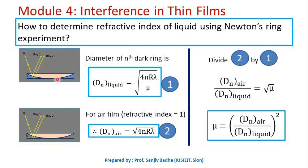If we fill this gap between the spherical surface and plane surface with liquid, for the liquid film, the diameter of the nth dark ring is given by (D_n)_liquid equals square root of 4nRλ/μ, where μ is the refractive index of liquid.